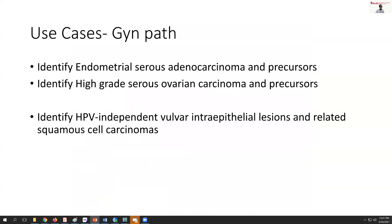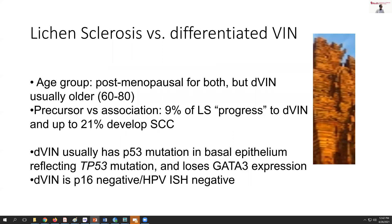The primary use cases in GYN pathology for these patterns are in endometrial serous adenocarcinoma and its precursors — intraepithelial carcinoma — as well as in high-grade serous ovarian carcinomas, and differentiating those from endometrioid versus low-grade serous tumors or other lesions. It has also been recently discovered that vulvar intraepithelial lesions of the non-HPV type and their related squamous carcinomas are also situations where P53 can be a very useful marker.